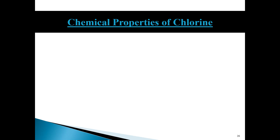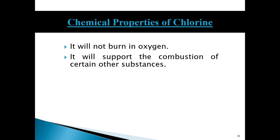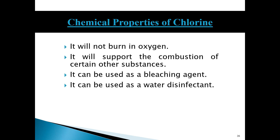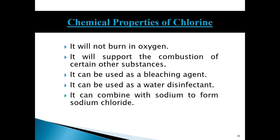Going back to the chlorine example, some chemical properties are: it will not burn in oxygen, it will support the combustion of other substances, it can be used as a bleaching agent, it can be used as a water disinfectant, and it can react with sodium to form sodium chloride — a very explosive reaction generating a lot of heat and light. Collectively, these are the chemical properties of chlorine.